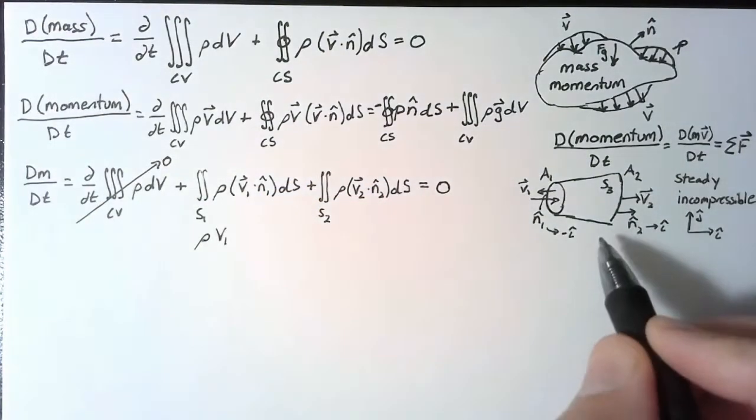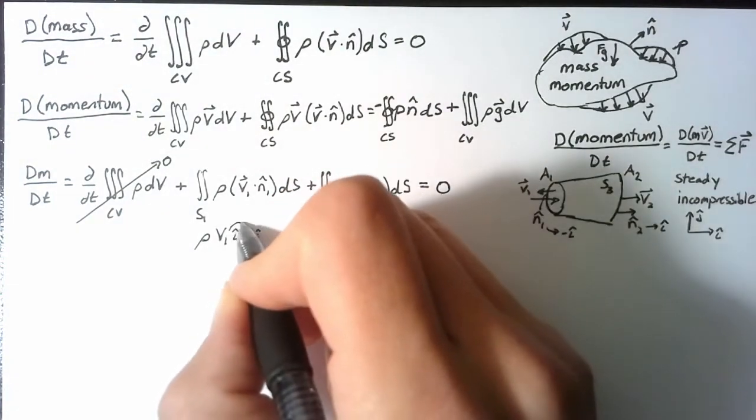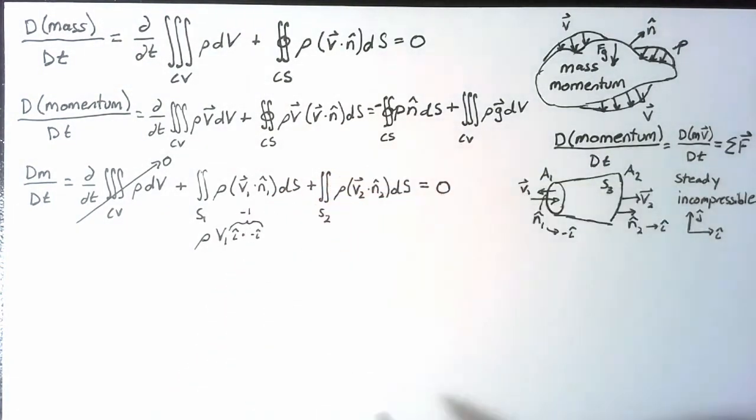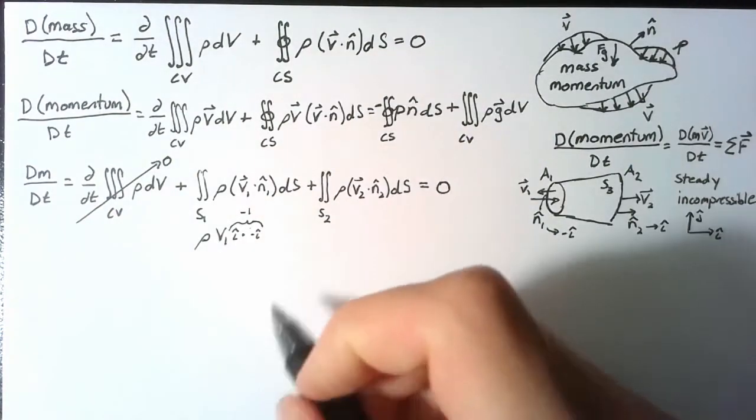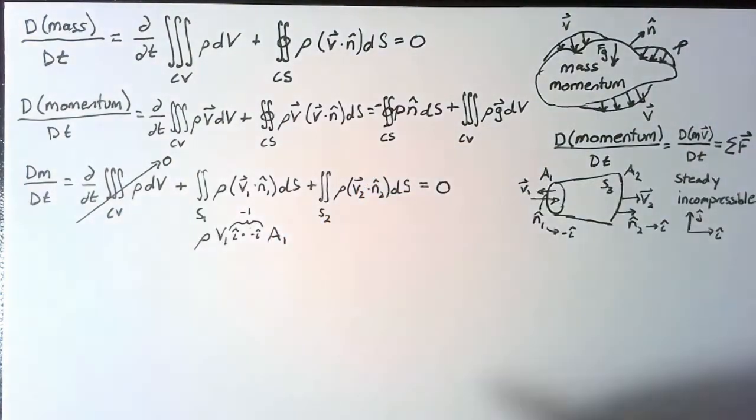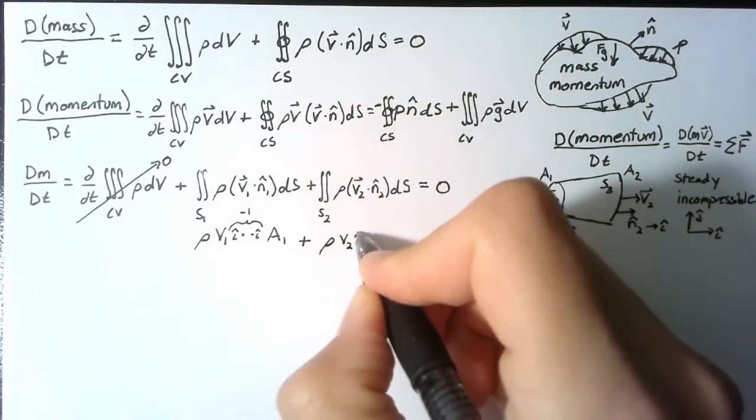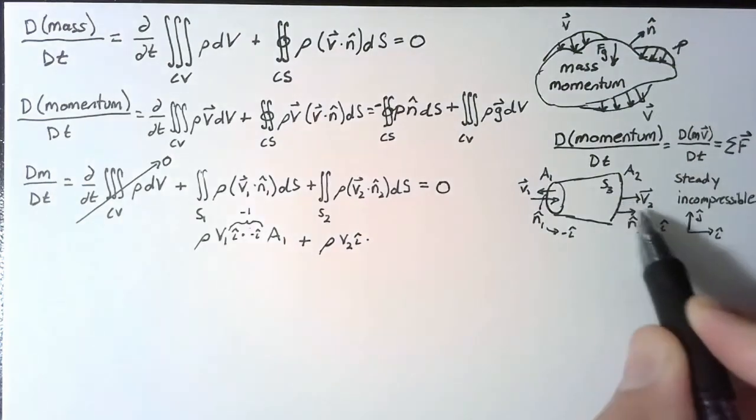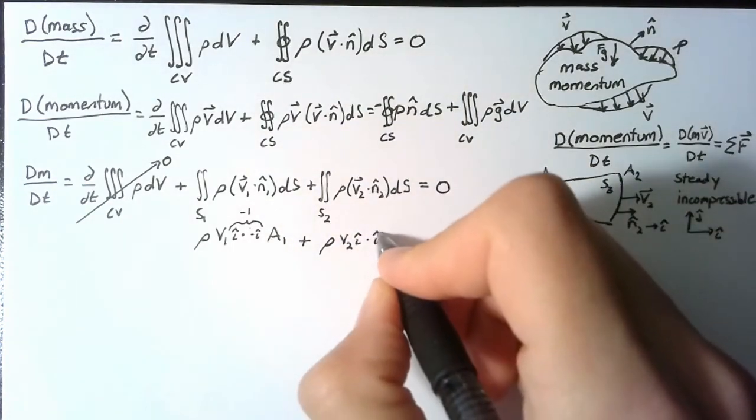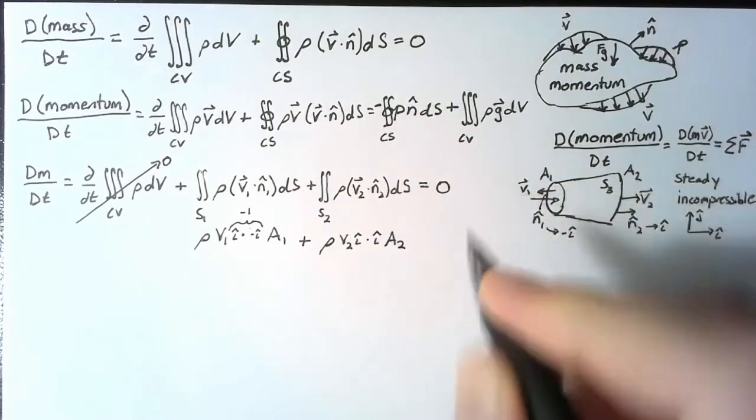Dotted with a negative i. And these two together are just a negative one. Then we're integrating over the area a1, so we can multiply that in there as well. Our second term, again we have rho, then we have v2i, but now we're dotting with a positive i, because our n2 is in the positive i direction. And again, multiplying with the area, which is this time a2.